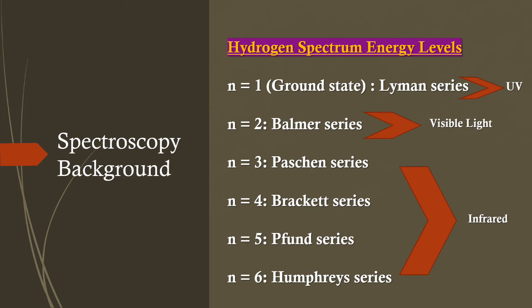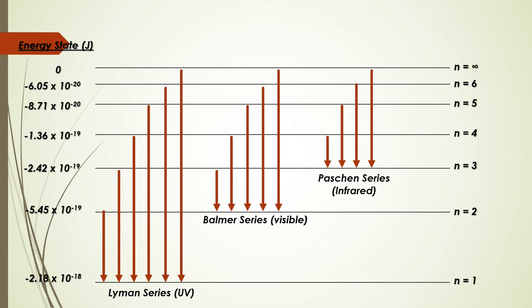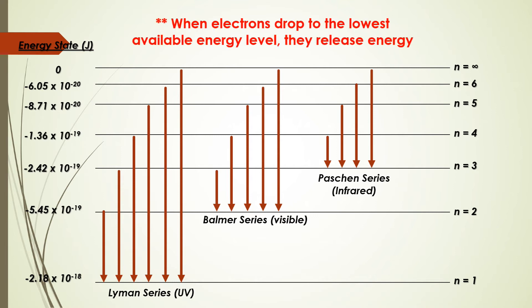This next slide shows an example of what an energy level diagram may look like. Any arrow that falls to a certain energy level corresponds to that series and will release energy according to its energy state, shown on the left-hand side.